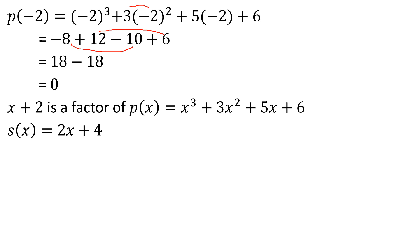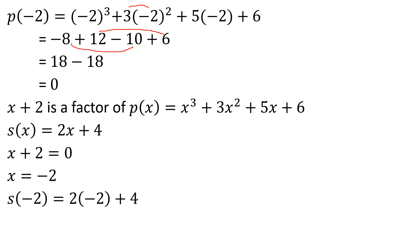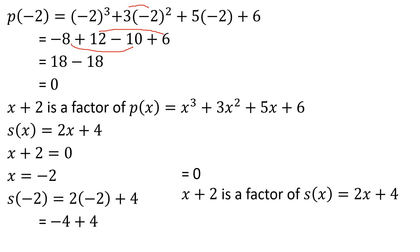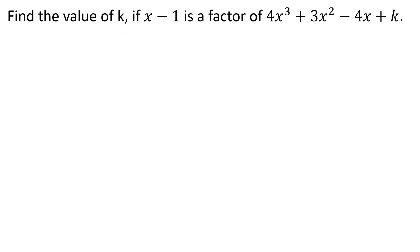Now for S(x) = 2x + 4: set x plus 2 equal to 0, so x = -2. Then S(-2) = 2(-2) + 4 = -4 + 4 = 0. Therefore x plus 2 is a factor of 2x + 4 as well.